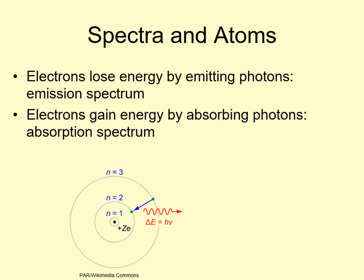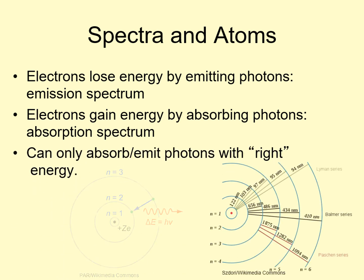Similarly, when an electron absorbs a photon of the right energy, it jumps up a level. The photon's energy, or color, determines how much energy the electron can absorb. If there's an orbital there, the absorption happens. The electron can only absorb a photon if it has the right energy. If a photon comes along and doesn't give the electron the right energy to go up to another orbital, the electron doesn't absorb that photon — it just goes on past.